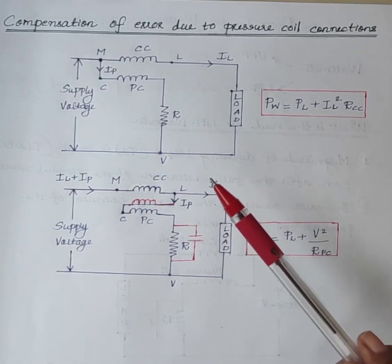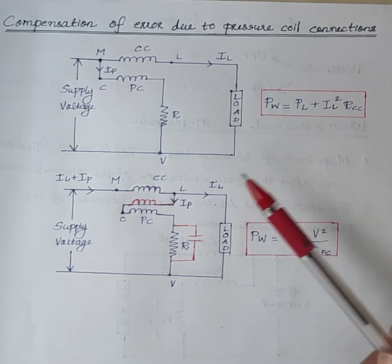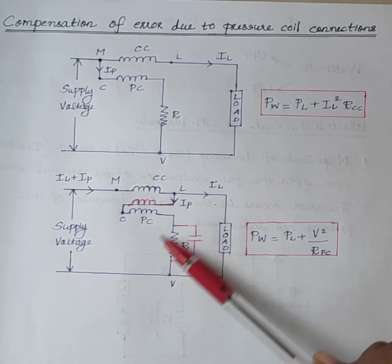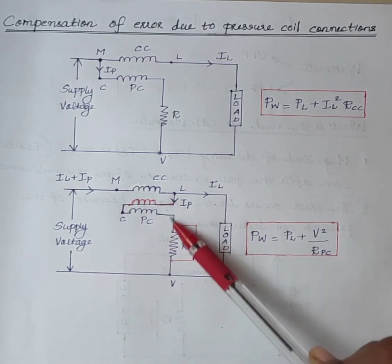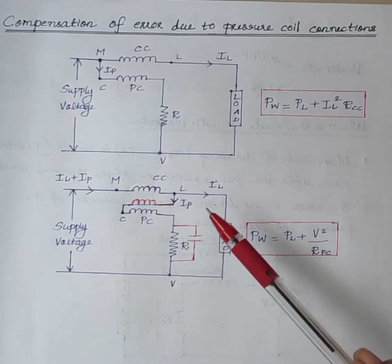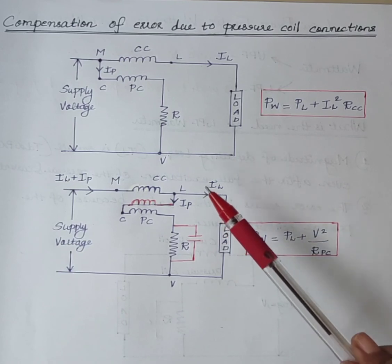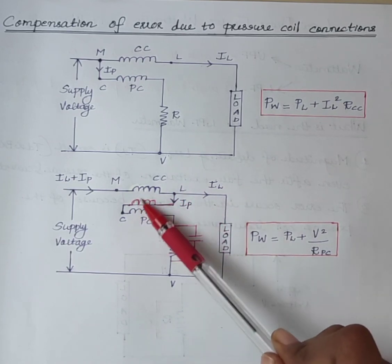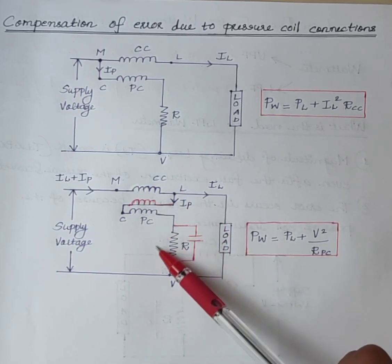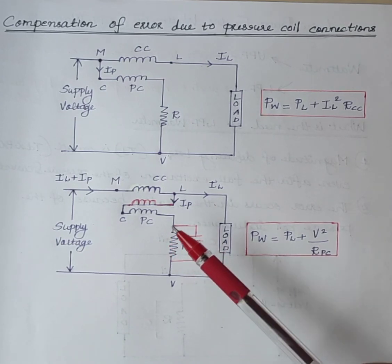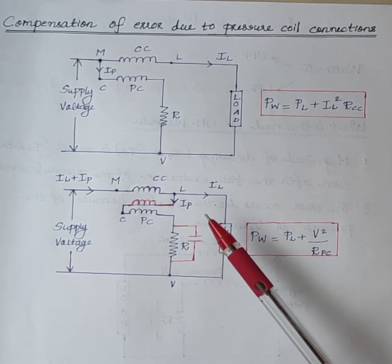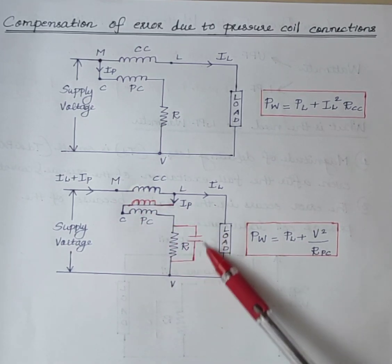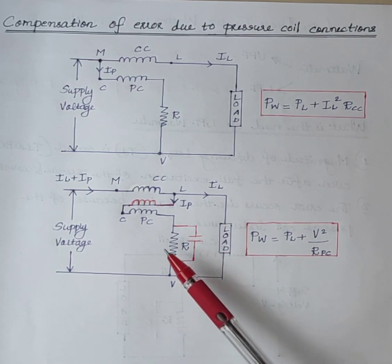From this discussion, we can make three main conclusions. First, in a low power factor meter, in order to increase the deflecting torque, a low resistor is connected in series with the pressure coil. Second, in order to compensate the error due to pressure coil connections, a compensating coil is connected in series with the pressure coil. Third, in order to compensate the error due to pressure coil inductance, a capacitor is connected in parallel with the series resistor.